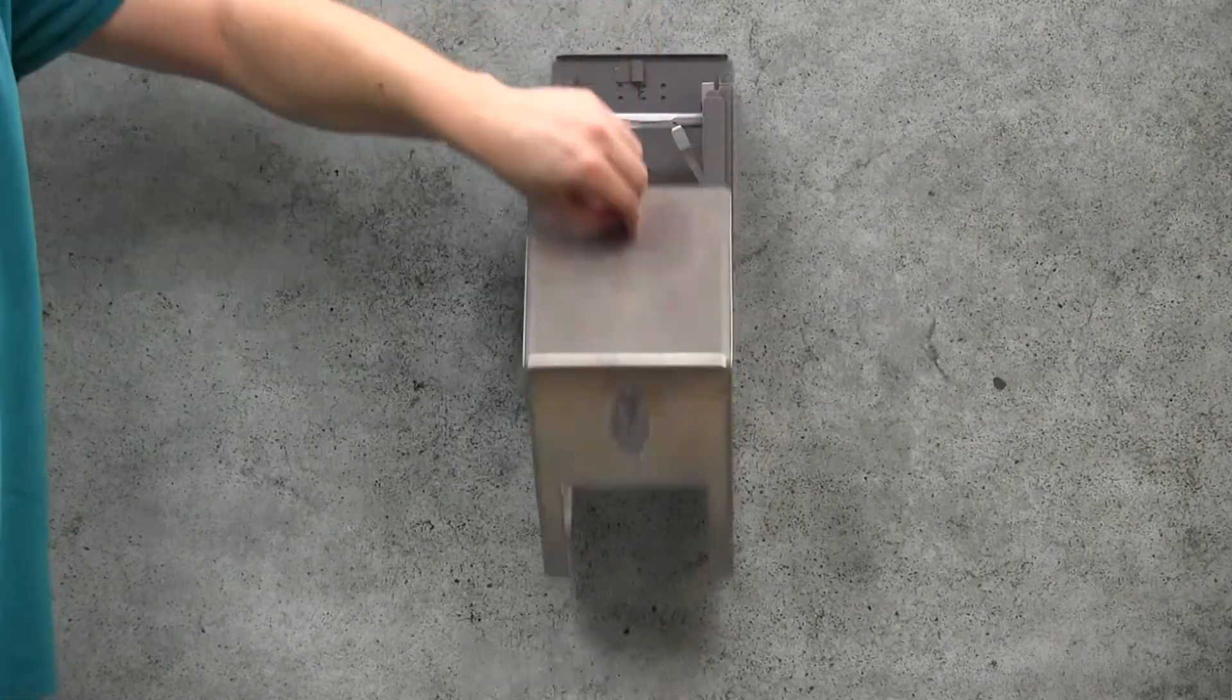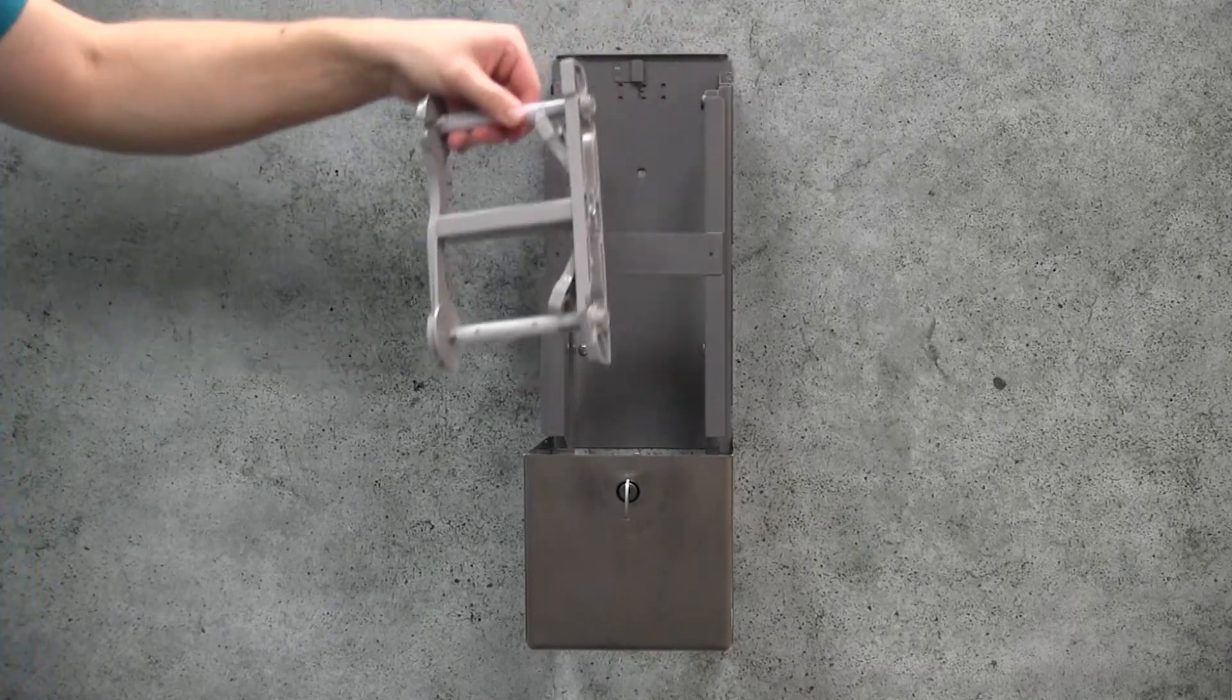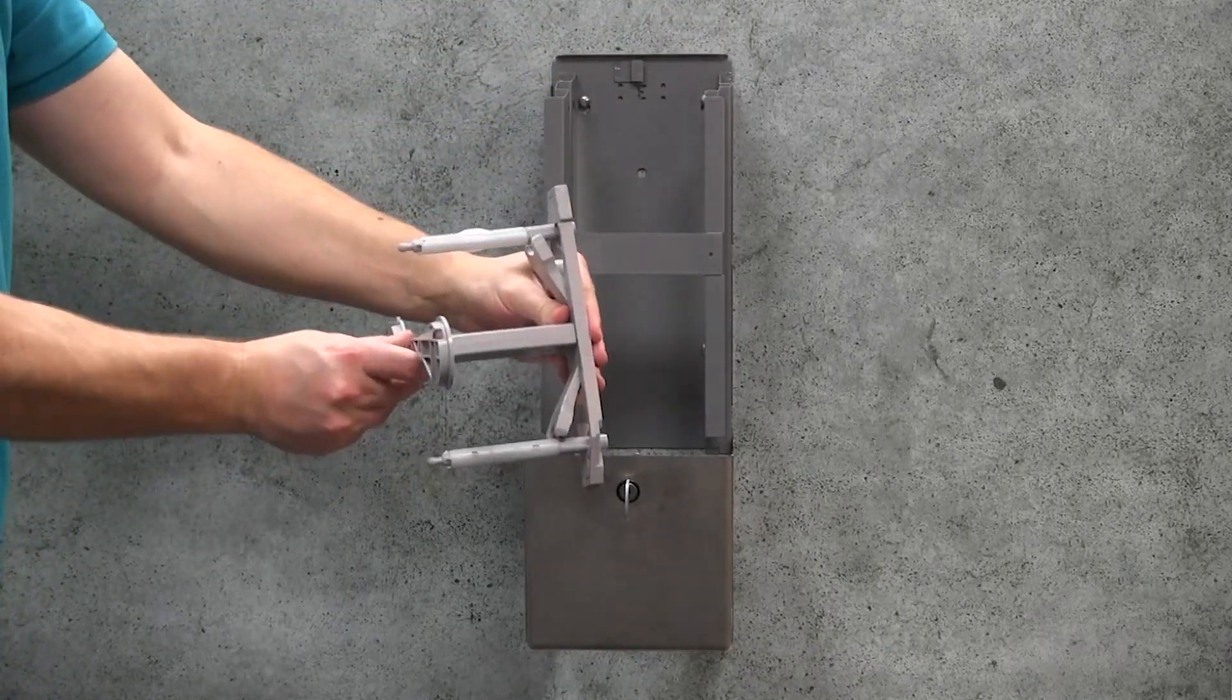Open the dispenser using the key provided. Remove the roll transfer sled. Rotate the arm on the left side of the sled.